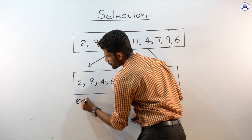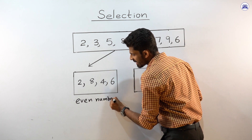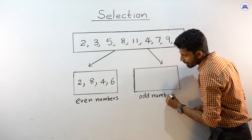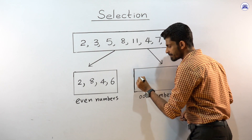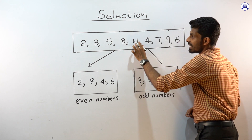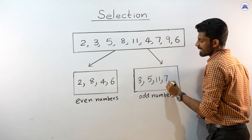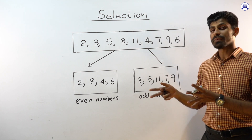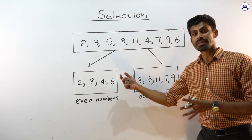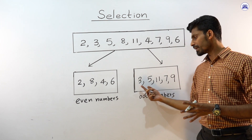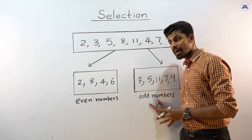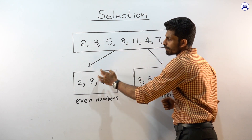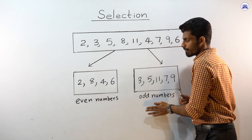So we can categorize them into two categories: even numbers and odd numbers. What are the odd numbers? Three, five, eleven, seven, and nine. Two, eight, four, and six can be divided by two without a remainder, but the odd numbers cannot be divided by two without a remainder — there is a remainder. So we can identify characteristics and separate into two groups: even numbers and odd numbers.